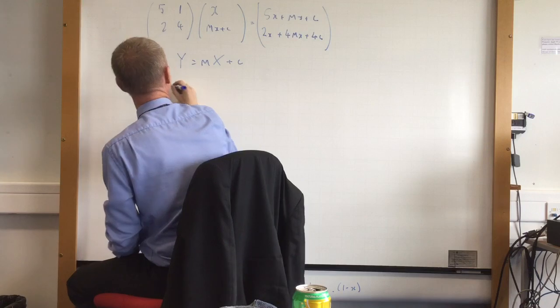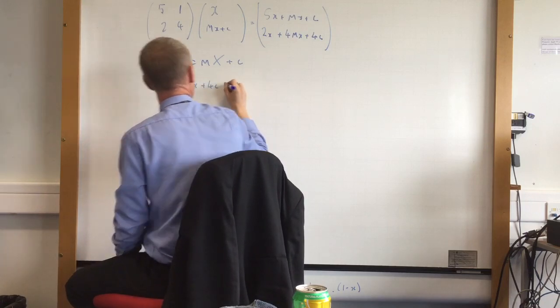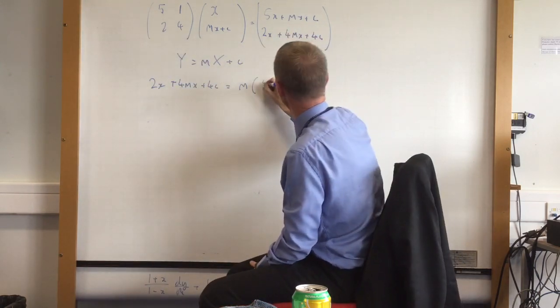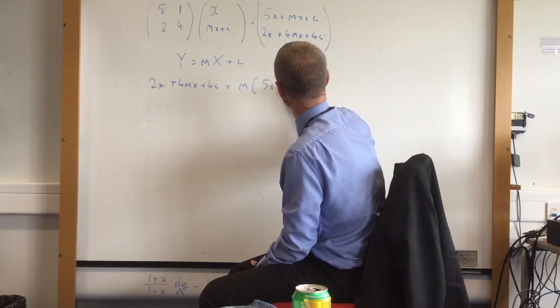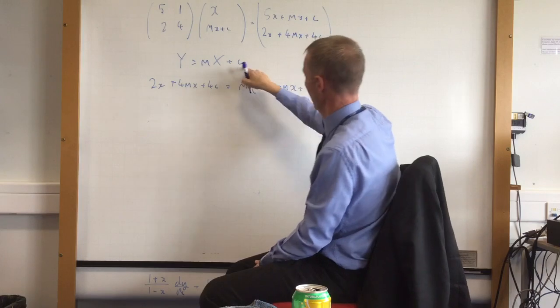So the y bit is 2x plus 4mx plus 4c equals m times my x bit, which is the top 5x plus mx plus c, plus c, which is that bit there.